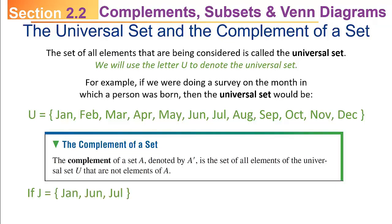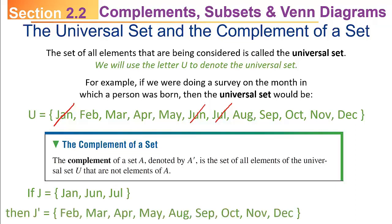For example, if the set J is a set containing January, June, and July, then the complement of J would be: you go up to the universal set and you cross out the elements of J, which would be January, June, and July.